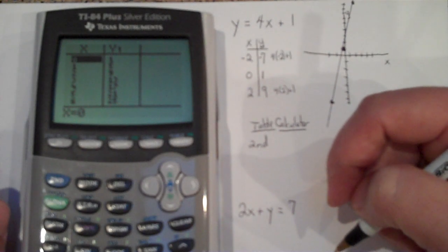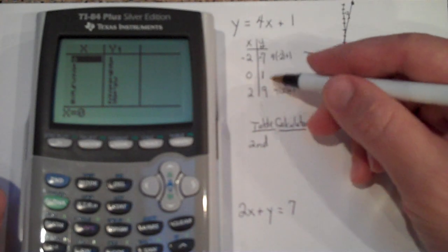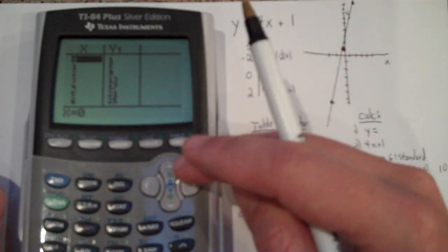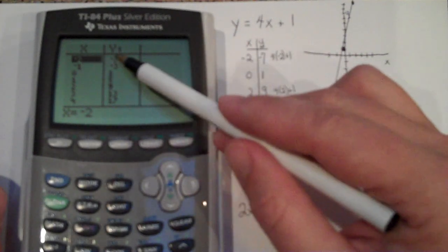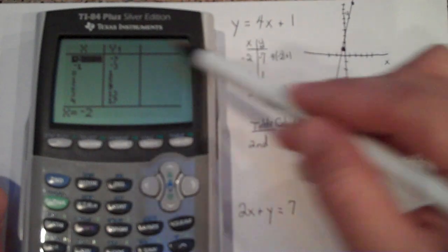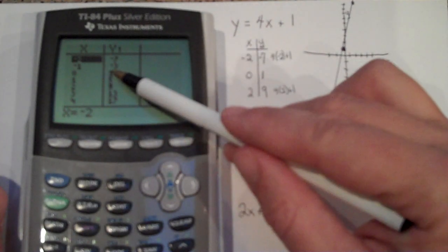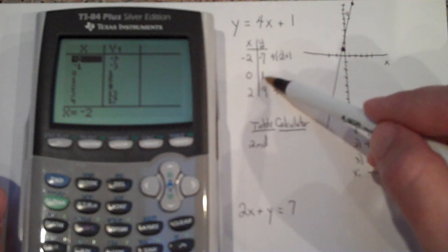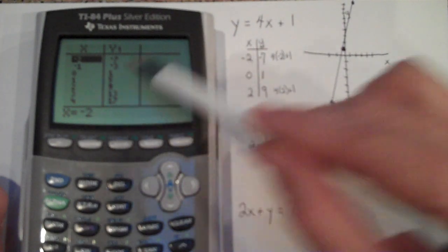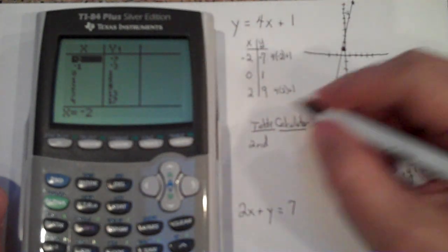And so what that gives me is a much more complete X, Y table than the one that I've developed here. So I'm just going to scroll to negative 2 and verify that negative 7 is the output. That's the same I have here. If I look at 0 as my input, 1 as my output, that's what I have here. And then if I look at 2 for input, 9 I have output. So this checks.